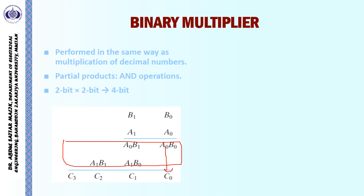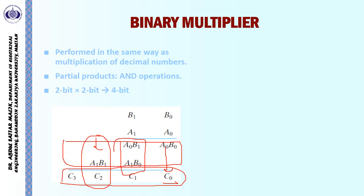A0B0 comes directly as the first output bit. To add the next two bits, we can use a half adder. If there is a carry, that carry along with A1B1 can again use a half adder, and we will have a four-bit product of the two 2-bit numbers.